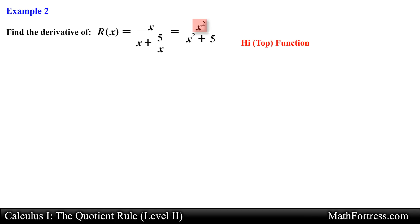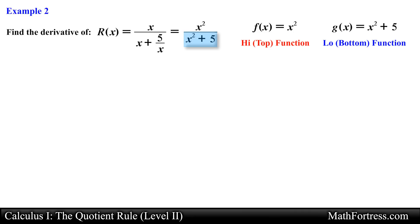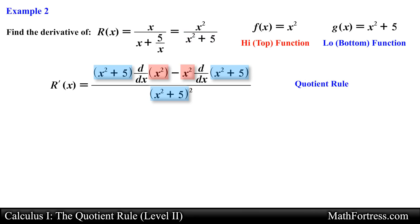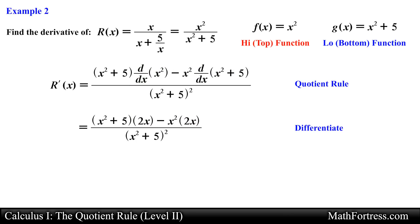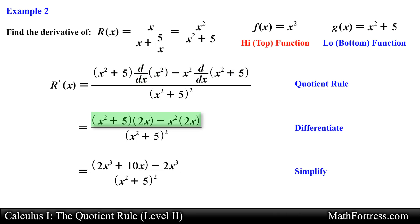We will use x squared as our f and the quantity x squared plus 5 as our g. Then it is just a matter of substituting these expressions into the quotient rule formula. Next we go ahead and find the derivative of f and g. The last step is to simplify the numerator by distributing the monomials and collecting like terms. Doing that yields the final derivative equal to 10x over the quantity x squared plus 5, squared.